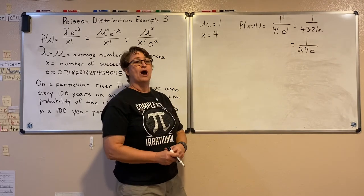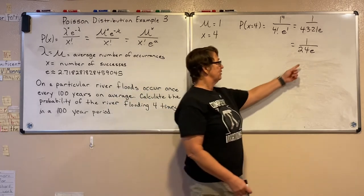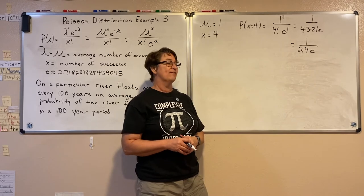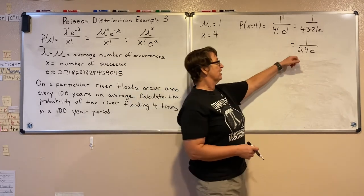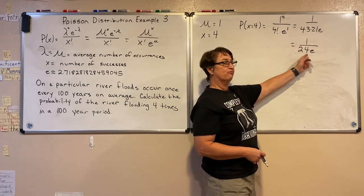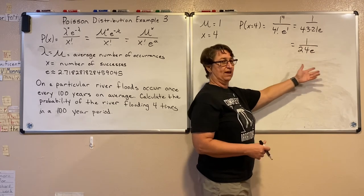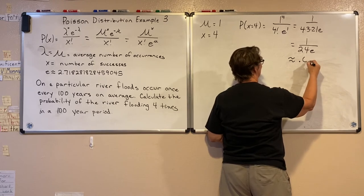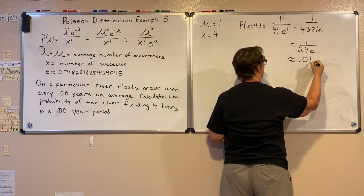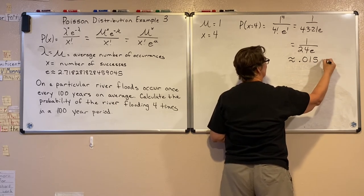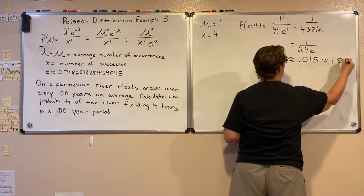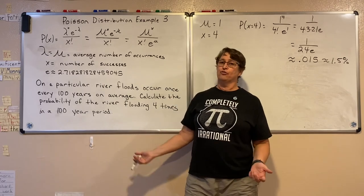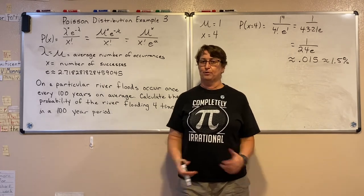If we want to approximate, make e ≈ 2.7. Put into the calculator: 1 divided by 24 divided by 2.7. We should get about 0.015, which is about 1.5% of the time. We would expect there to be 4 floods on this river in that 100-year period.